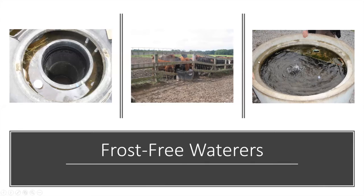This is a Cobett waterer — it still uses geothermal heating. And then there's a cascading tank, which is part of a system where each tank is lower than the other. This example is coming off a natural spring — you can see the inlet and the intake for the next tank. Cascading tanks are very efficient at keeping tanks open, keeping the water moving and ice-free.